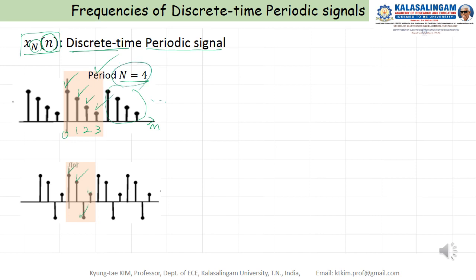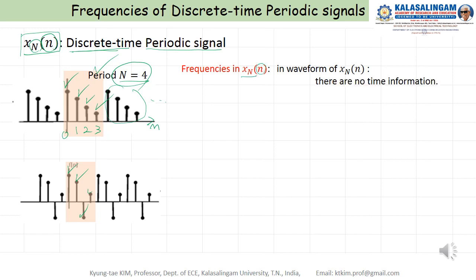The period N equals four. Then, frequencies in discrete time periodic signals — now you can see here, there is no time information here. Therefore, we do not know the frequencies, because we do not have time information. We don't know.